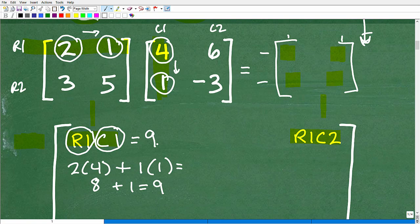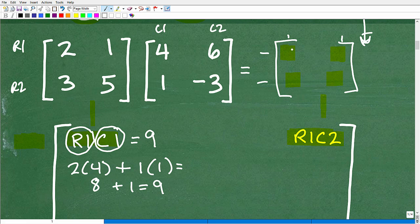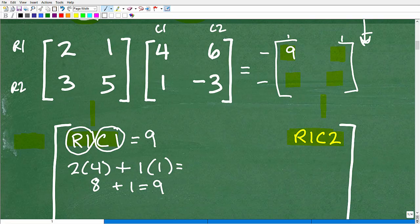If you can kind of follow this pattern, then you're going to be successful. Let's do another position. Let's do this guy right here. Let's do row 1, column 2. So this will be 9. Here in our answer, we'll put this right here. That's 9. That's our row 1, column 1.